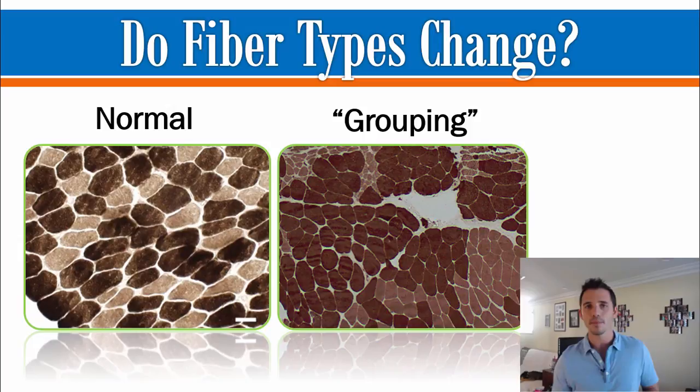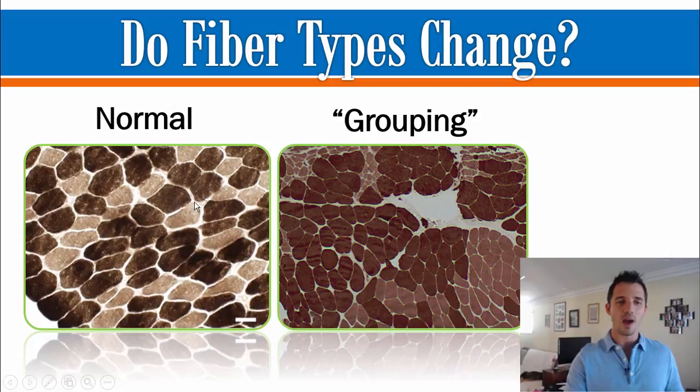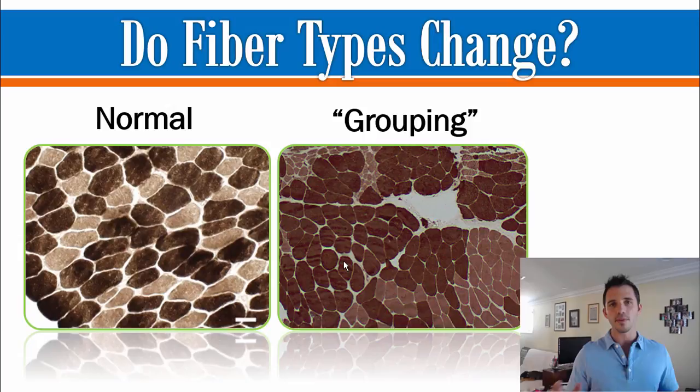If a slow motor unit reaches out and grabs some new fast twitch muscle fibers and brings them into its motor unit, those fibers are then going to change and become slow. So normally you have this mix of fast twitch and slow twitch spread out evenly throughout the muscle. In the case of grouping, because so many neurons die out, you get huge chunks of 20, 30, or 50 fibers that are all the same fiber type in big bundles — one of the things that leads to a lack of fine-tuned motor control.